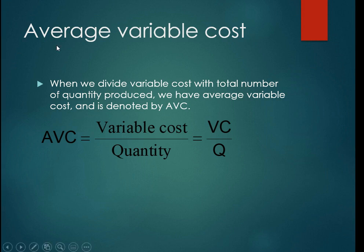The definition of average variable cost is when we divide variable cost by the total number of quantity produced. We have average variable cost, and it is denoted by AVC.